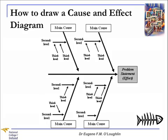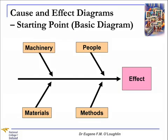Avoid vague statements such as 'possible lack of something' or 'in terms of something.' For this video, we have a simple cause and effect diagram starting point with machinery, people, materials and methods that cause a possible effect. If we need another category, we simply add one in — for example, we could add money or equipment. But for the moment, let's stick with these four.